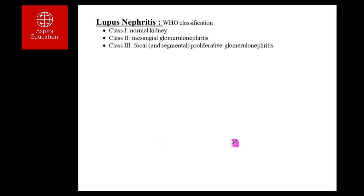Class III is focal glomerulonephritis — proliferation of endothelial and mesangial cells in glomerular capillaries, but limited to fewer than 50% of total glomeruli. Class IV is diffuse proliferative glomerulonephritis — more than 50% of glomeruli are involved, each showing proliferative changes with many proliferating endothelial cells and excess inflammatory cells in the mesangium. Class IV is the most severe form, presenting with worsening kidney function, hypertension, severe proteinuria, and severe microscopic hematuria.